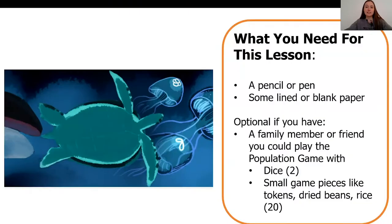What you're going to need for the lesson today is a pencil or pen, some lined or blank paper, and if you have the packet pages available that go with this lesson, then go ahead and get those out as well. Something that's optional but will make the next 20 to 25 minutes more exciting would be to check in with a family member, a sibling, or a friend to see if they would be able to play the population game with you.